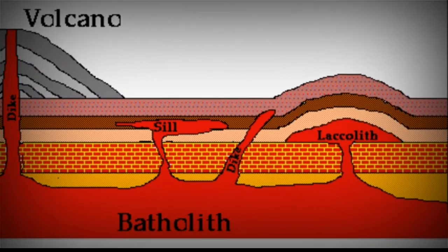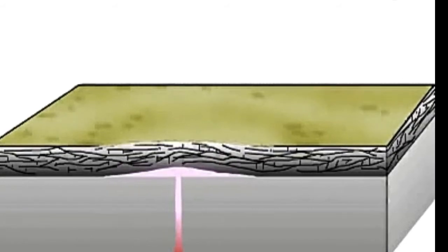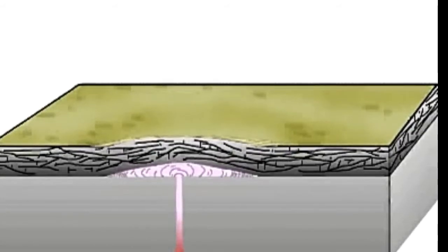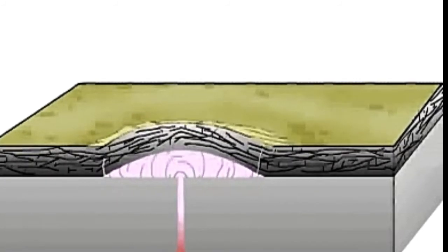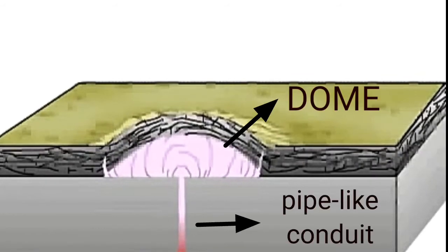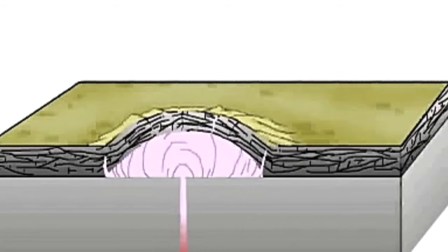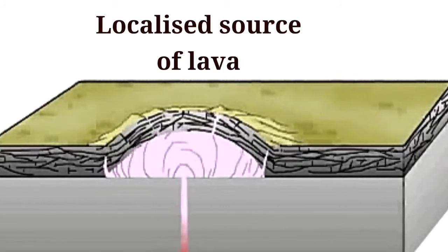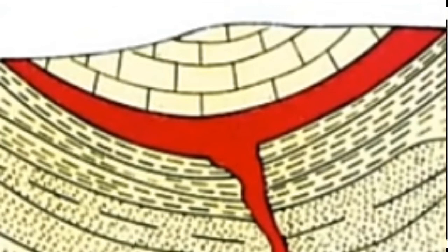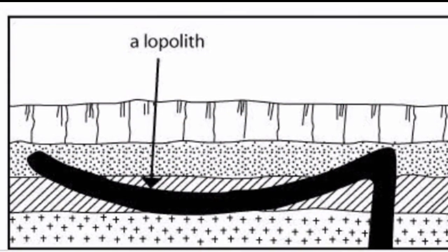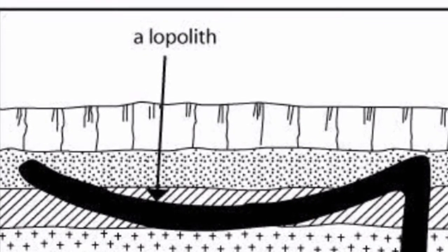The second form of intrusive landforms is the laccolith. Laccoliths are also large dome-shaped intrusive bodies, but they are not found at the base. The magma moves a little bit upward and then settles down in the shape of a dome. This dome-like structure is connected by a pipe-like conduit from below. Laccoliths are also regarded as a localized source of lava that finds its way to the surface. In some cases, the lava develops into a saucer-shaped, concave-to-the-sky body. Such landforms are called a lopolith.